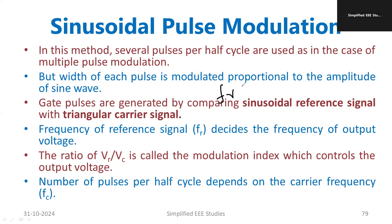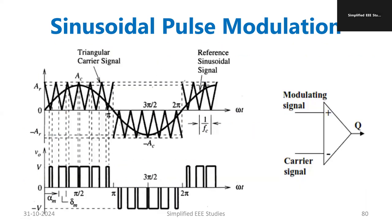Remember that the frequency of the reference signal fr will always be less than fc. The reference fr is taken as the sinusoidal waveform. We have a triangular carrier signal which has a very high frequency — many cycles per second — for each half cycle. The reference signal is the sine wave, with a much lower frequency.